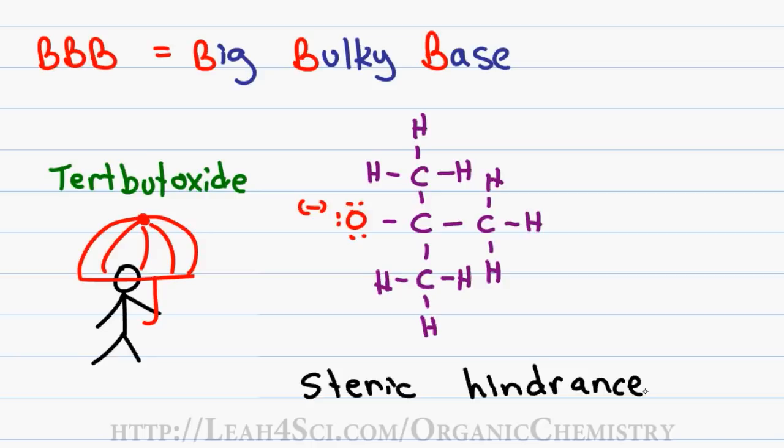So instead it has to resort to sneaking up on a side hydrogen of the molecule and pulling off that hydrogen which causes the elimination reaction. So anytime you see a big bulky base like tert-butoxide, the first thing that should come to mind is an E2 reaction.